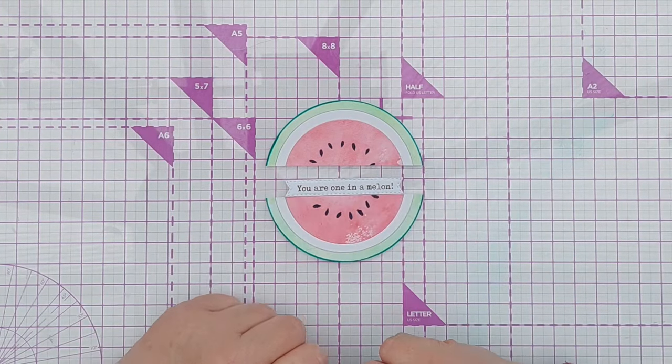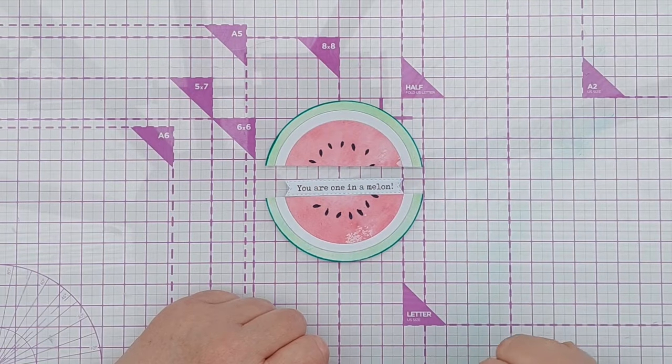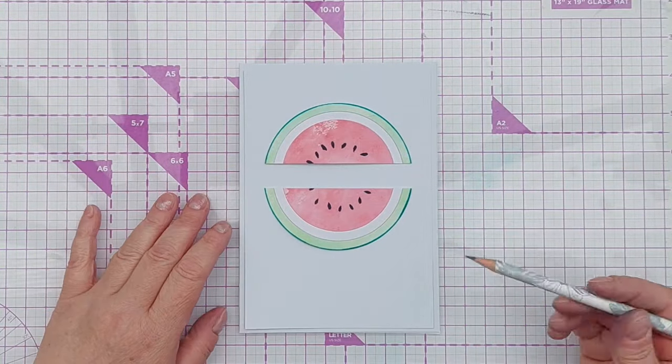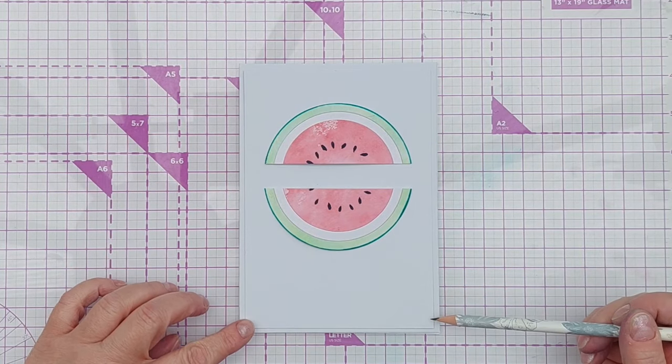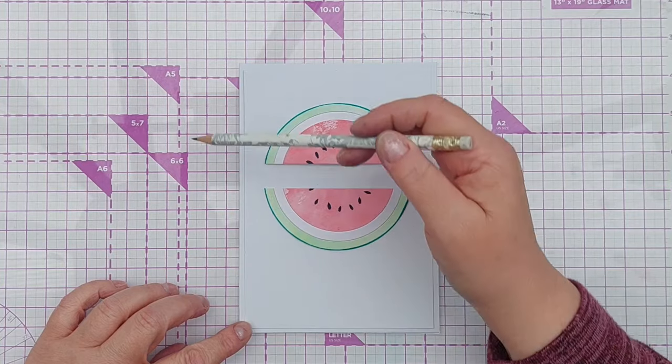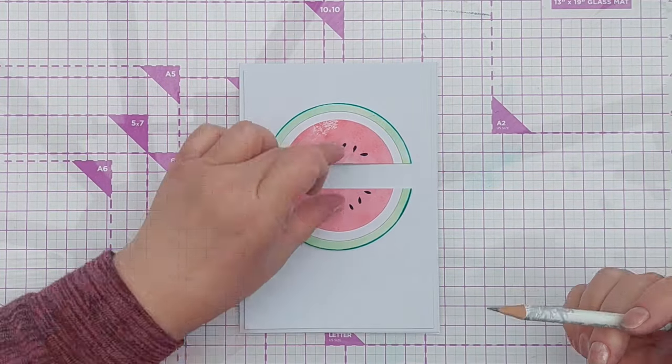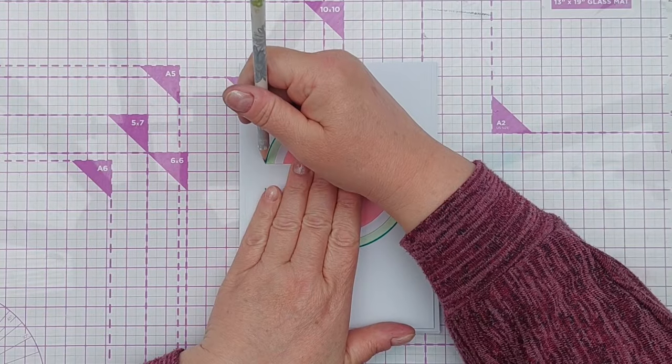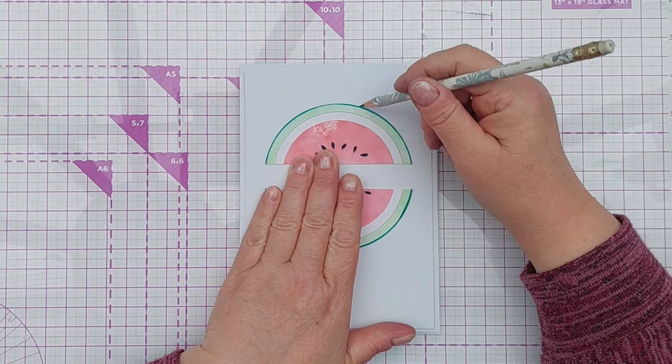My card is going to be five by seven inches and I've got a piece of smooth white cardstock to use as a panel that's about an eighth of an inch smaller all the way around. This is where I want the melon to sit, slightly above halfway. I'm going to carefully draw a very faint line around it so I know where it's going to sit.